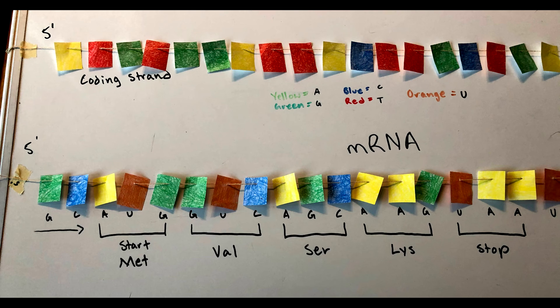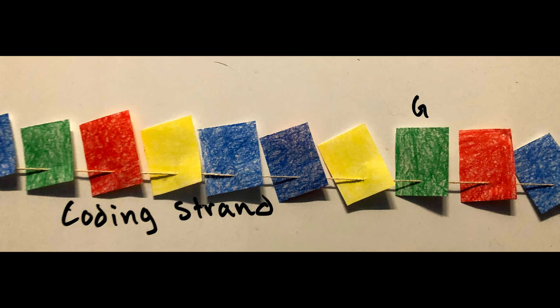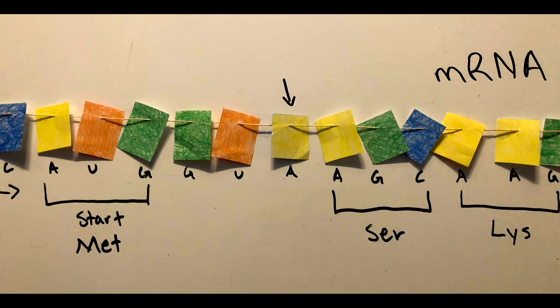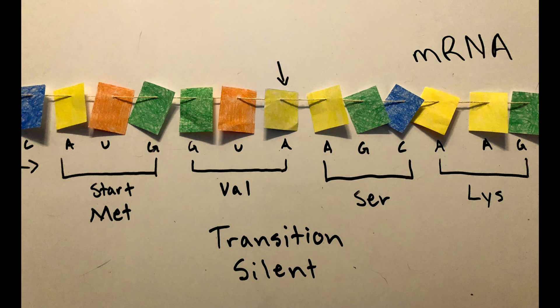Back to the version with no mutations and let's say that this G is mutated to a T. Then this nucleic acid will become an A and will still be translated to valine.